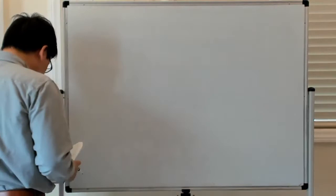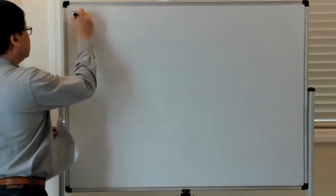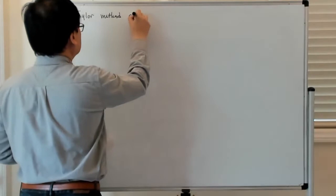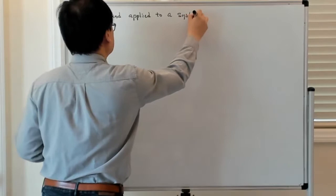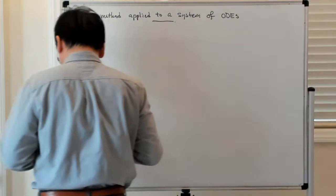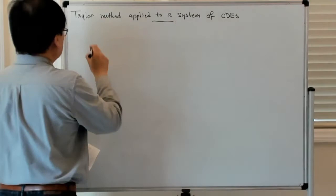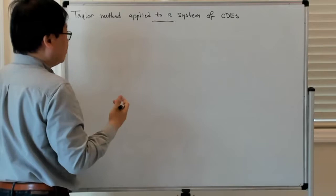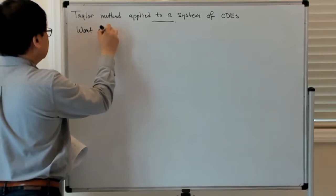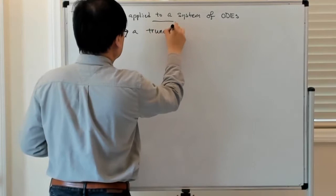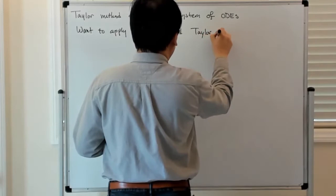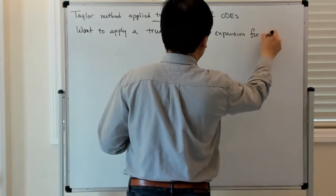Let's look at an example of the Taylor method applied to a system of equations. What you want to do is apply a truncated Taylor expansion for each of the components of that system — a truncated Taylor expansion for each component.